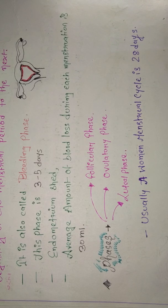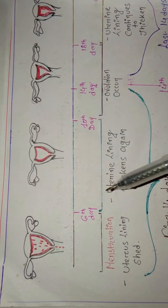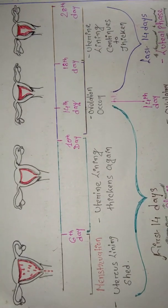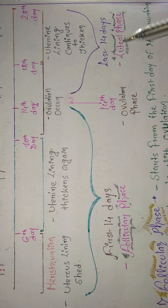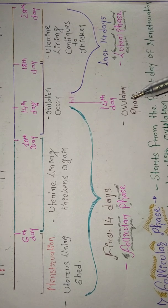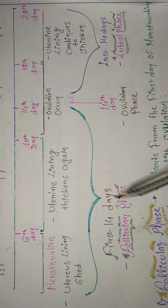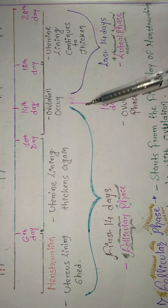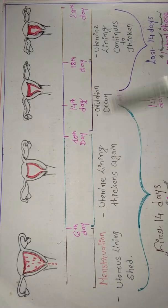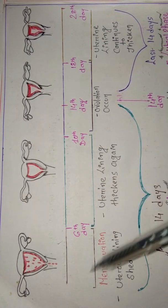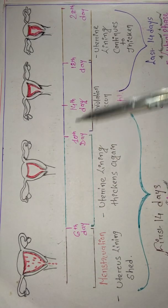Let's divide the 28-day cycle: the first 14 days are the follicular phase, the last 14 days are the luteal phase, and on the 14th day we have the ovulatory phase. If asked about the menstrual cycle in an exam, I highly recommend drawing a scale diagram — you will get extra marks for that.